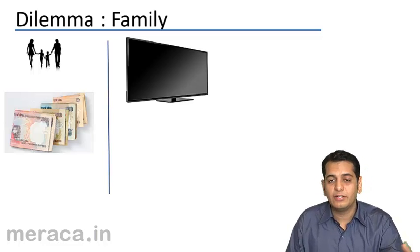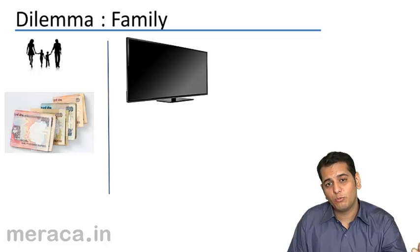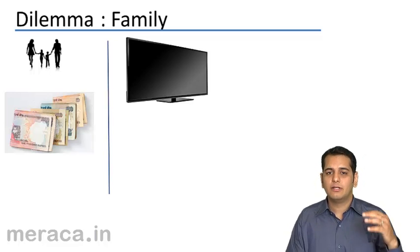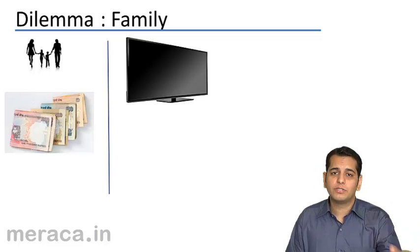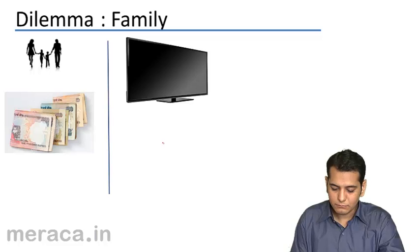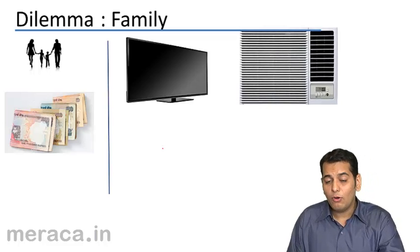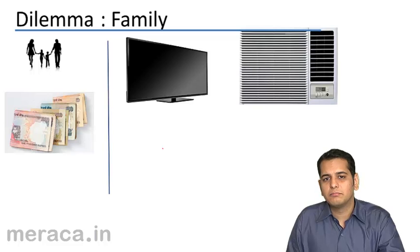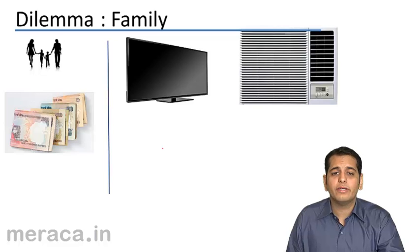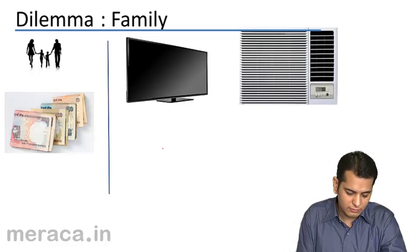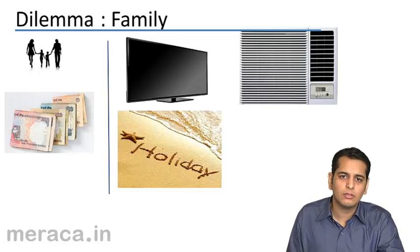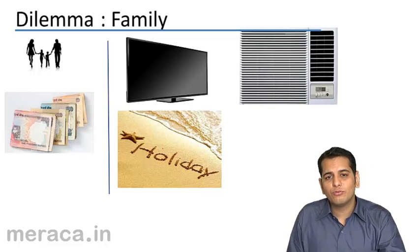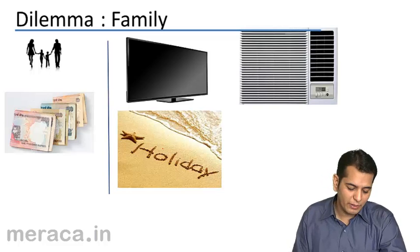A family might need to spend on a TV — they might want to purchase a new TV. Or the summer is coming up, and it may feel the need to purchase an AC since it's getting hot. It may also want to go for a holiday — exam season is over, so now it may want to go on a holiday, which is a good way of bonding the family.